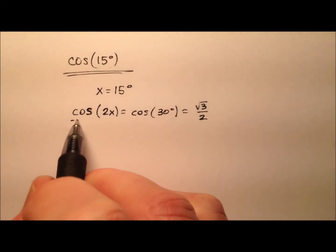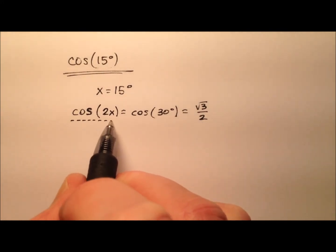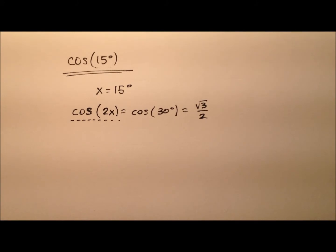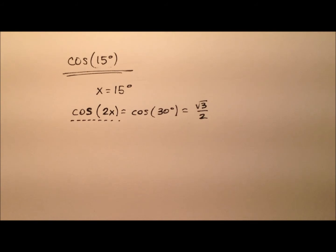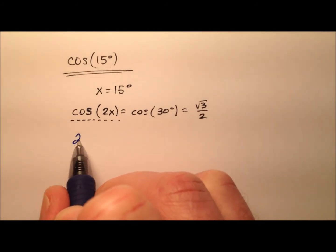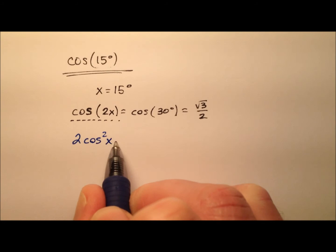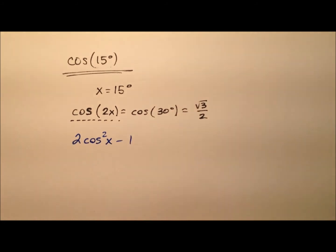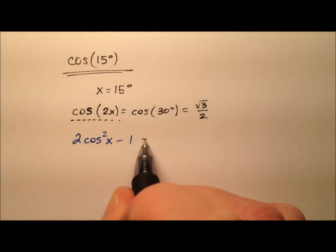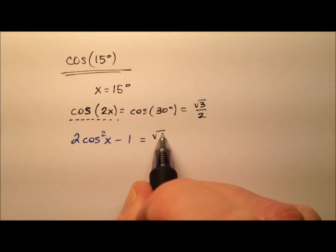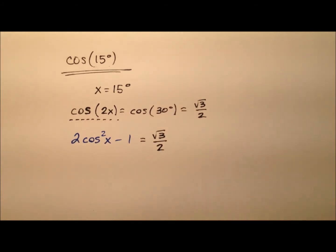I have this double angle identity here, this cosine of 2x. I would like to go ahead and exchange that for an equivalent expression, and that's going to be two times cosine squared x minus one. And now I can set that equal to the square root of three over two.